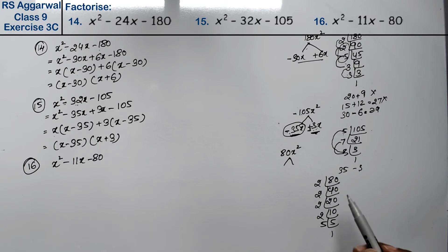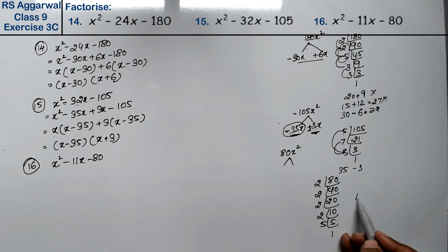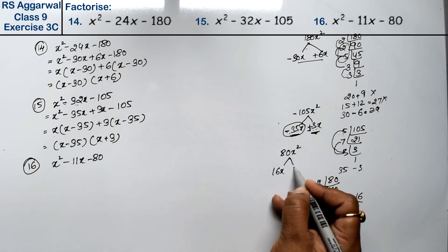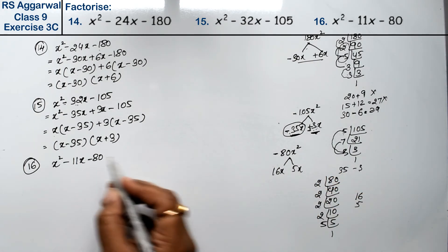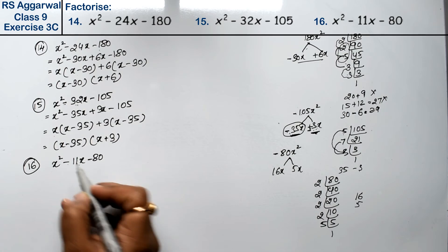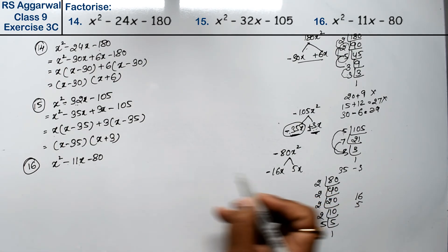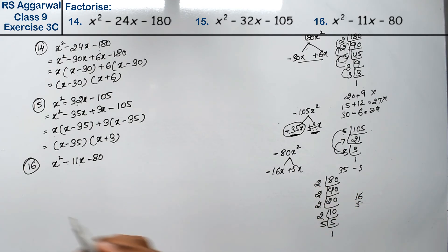We need to make 11. 2 twos are 4 and 2 twos are 8; 5 twos are 10 — this will not work. Now: 2 twos are 4, 2 twos are 8, 8 twos are 16 and 5. So we get 16x and 5x. Since it is minus and 11x is minus, the greater number takes minus and the other takes positive.